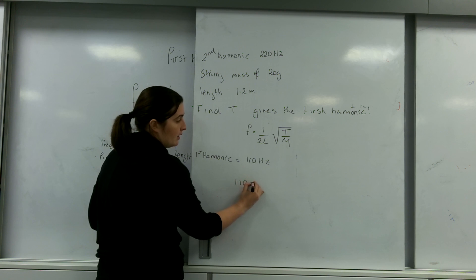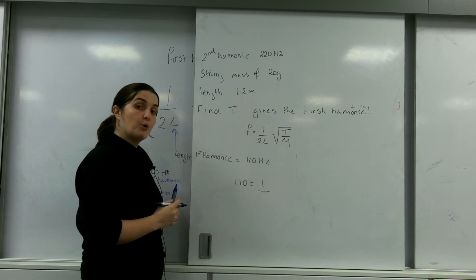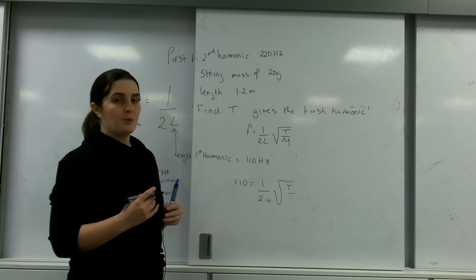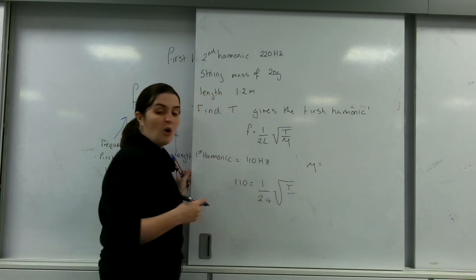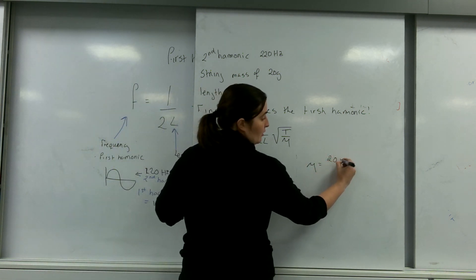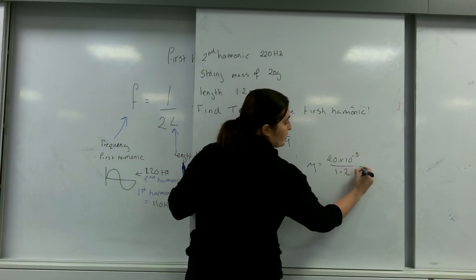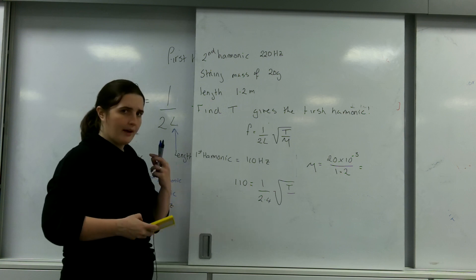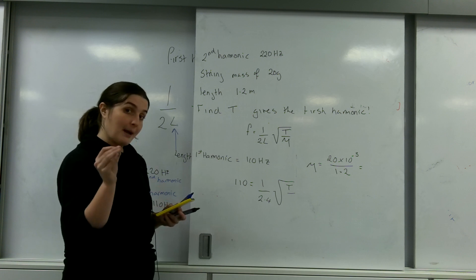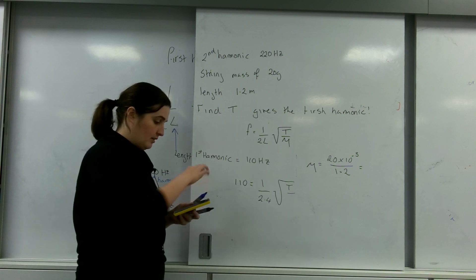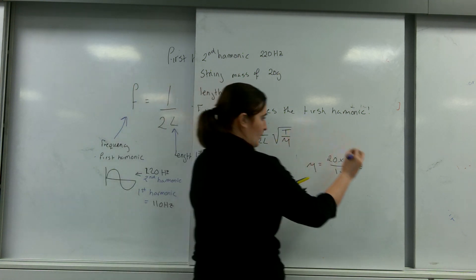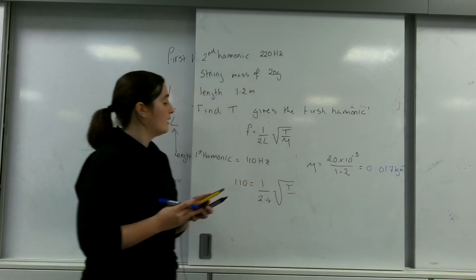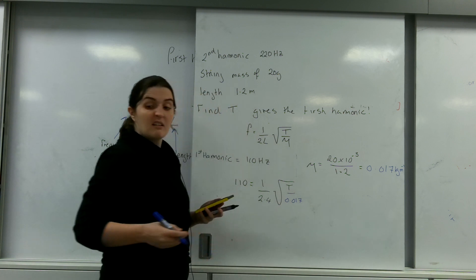So I have 110 equals 1 over 2 times 1.2, which is 2.4, square root of T over mu. I like calculating mu on its own so it's just one number without lots of formula inside. Mu equals 20 times 10 to the minus 3 divided by 1.2 — the reason it's times 10 to the minus 3 is it's in grams, so I want it in kilograms. My answer is 0.017 kilograms per meter. Now I'm going to rearrange.